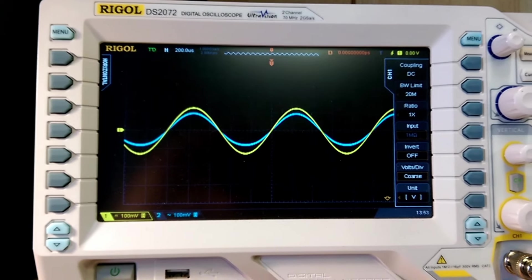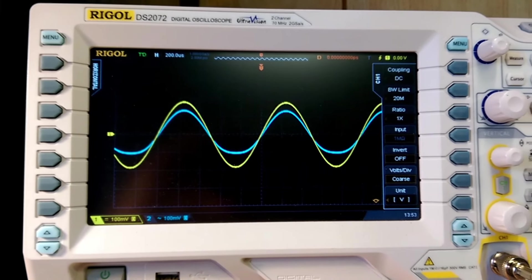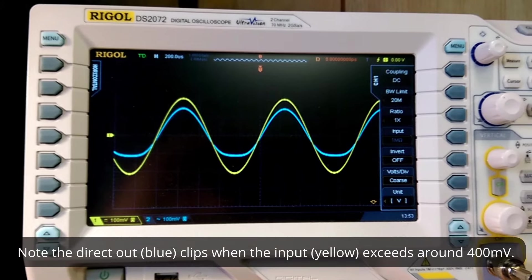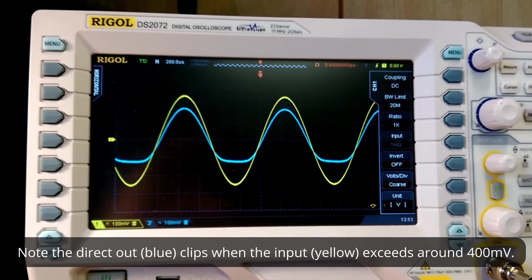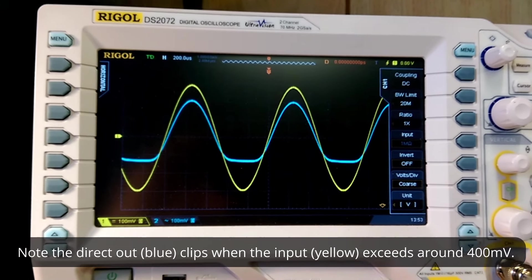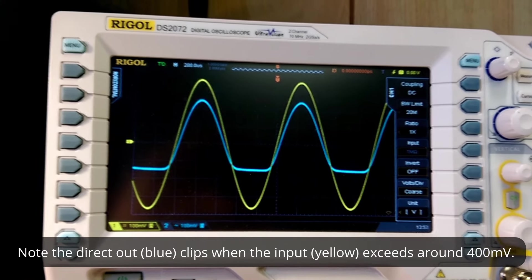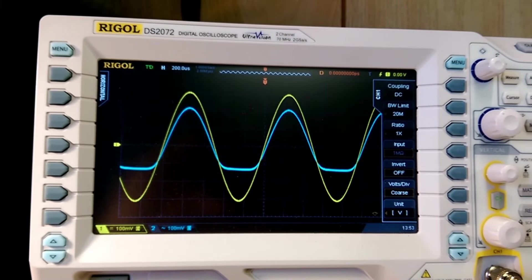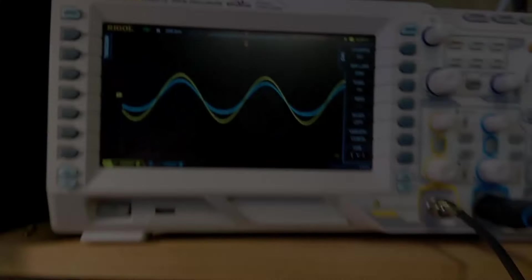So on a proper circuit, you should be able to turn it up and it should follow the input. Eventually it'll distort, but what shouldn't happen is the bottom shouldn't distort long before the top.